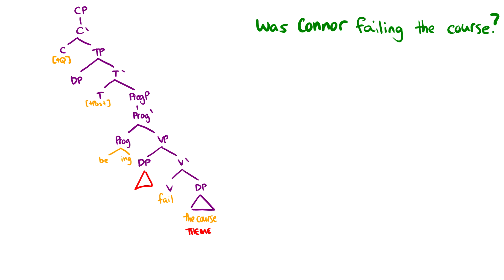Well, Connor. Connor is the one doing the failing. So we have the theta role given to Connor. And I guess this would be an experiencer. So this happens. Connor is the one failing the course.